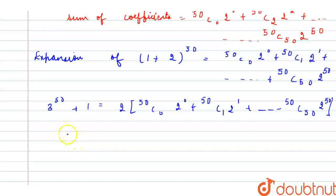which implies 50C0·2^0 plus this, the same thing up to 50C50, that is the last term, 2^50 would be equal to half of (3^50+1).